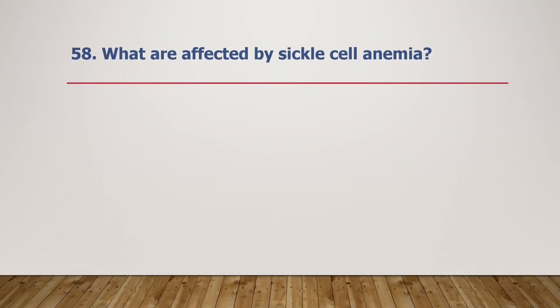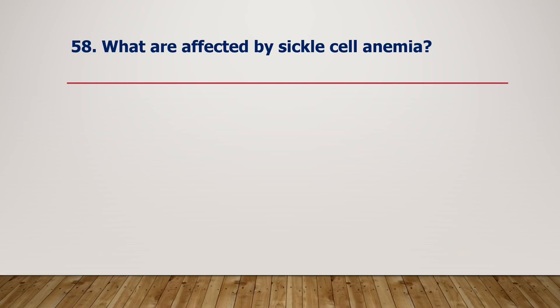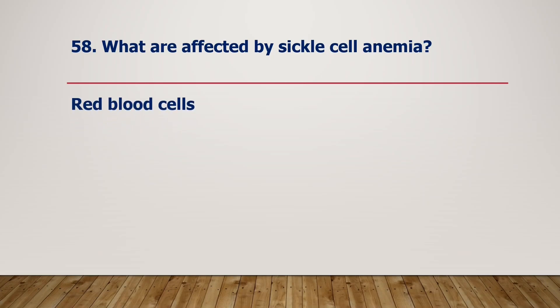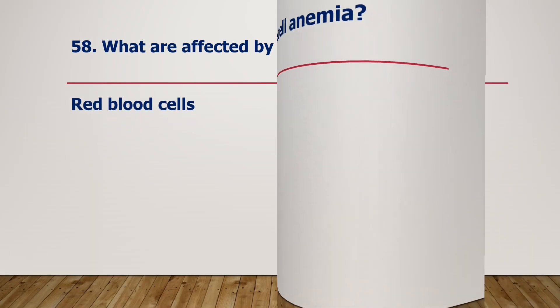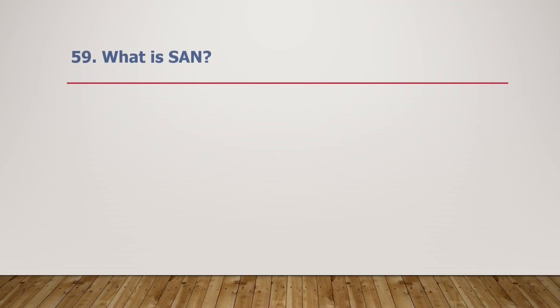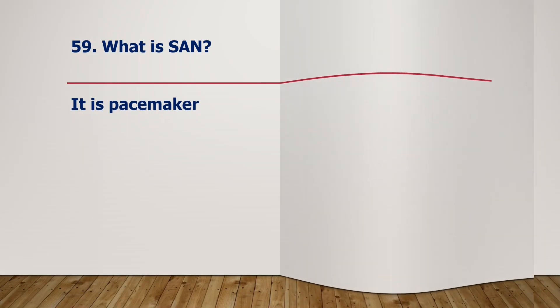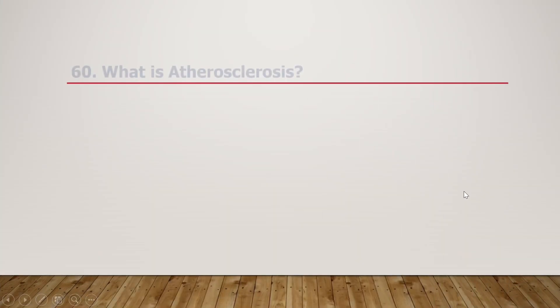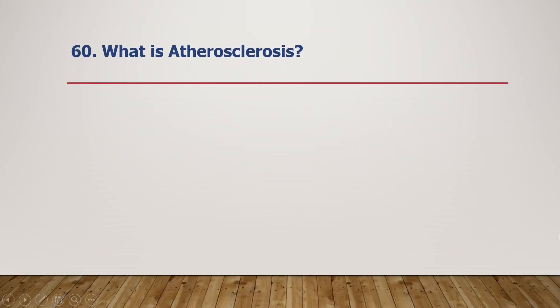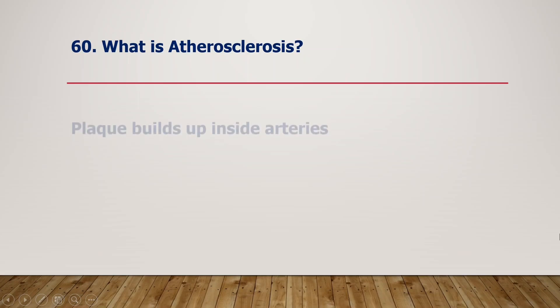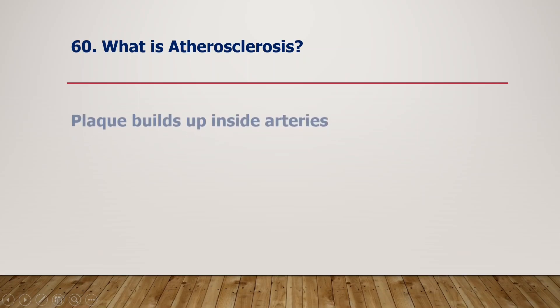What are affected by sickle cell anemia? Red blood cells are affected by sickle cell anemia. What is SAM? It is a pacemaker. What is atherosclerosis? Plaque builds up inside arteries.